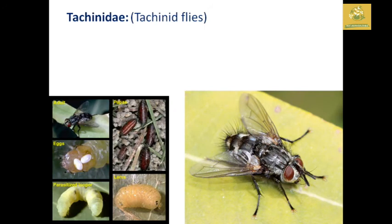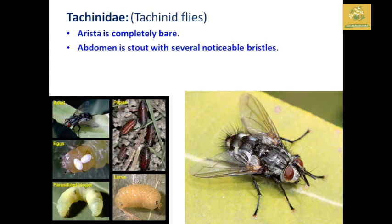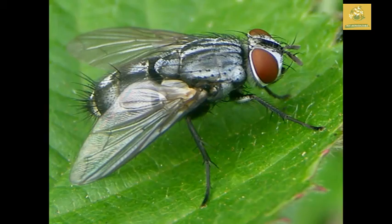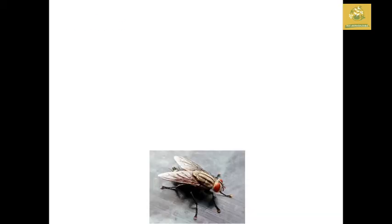Tachinidae comprises tachinid flies. The arista is completely bare in these insects. The abdomen is stout with several noticeable bristles. They are not host-specific and are endoparasites on larvae and pupae of Orthoptera, Hemiptera, Lepidoptera, and Coleoptera.